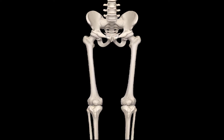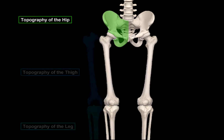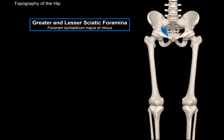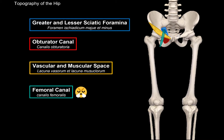So in this video, we're going to discuss the topography of the hip, and the next video will be about the topography of the thigh and the leg. The main topographical areas I want to focus on are the greater and lesser sciatic foramina, the obturator canal, the vascular and muscular space behind the inguinal ligaments, and the femoral canal. We will also talk about potential pathologies related to the femoral canal.